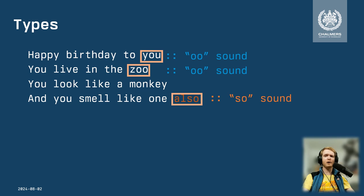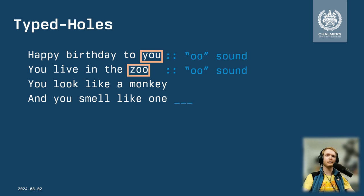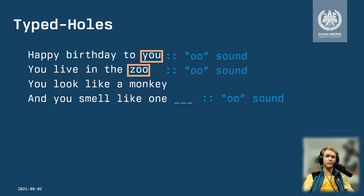So how can we fix this program or fix these lyrics? What we do is take out the wrong word and replace it with a hole. Because we know that this hole has a type, we call it a type hole.